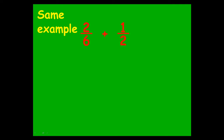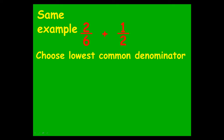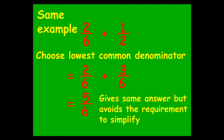Looking at the same example again — you don't always have to make a denominator that is the product of six and two. You'll notice that two goes into six, and six goes into six, so you can choose the lowest common denominator and make life a bit easier. If you can do it, do it; if not, you'll still get to the right answer in the end. So leave two sixths as it is, and scale one half up by multiplying top and bottom by three to get three sixths. Adding then gives a final answer of five sixths — same answer, but you avoid the need to simplify.